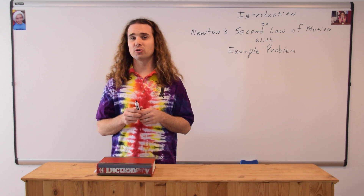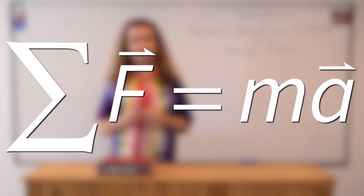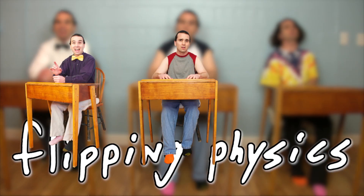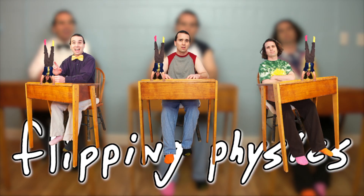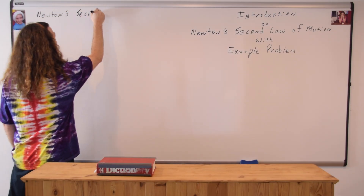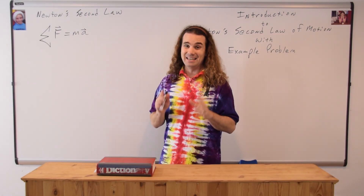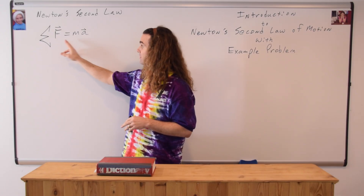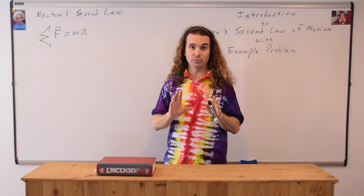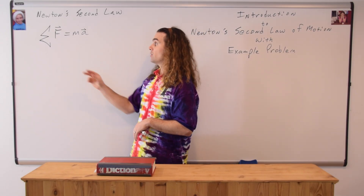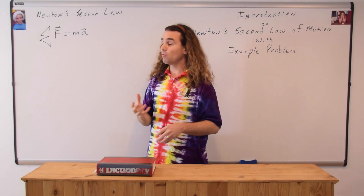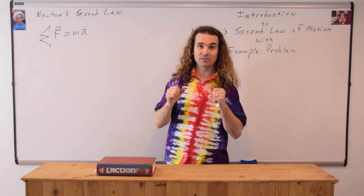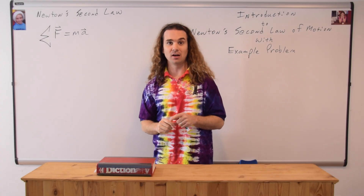Good morning. Newton's second law of motion is an equation: net force equals mass times acceleration, where both force and acceleration are vectors. That is Newton's second law — the sum of the forces, or the net force, equals mass times acceleration, where both force and acceleration are vectors.